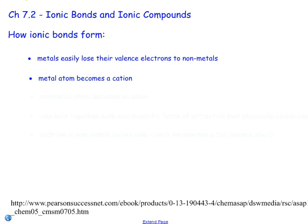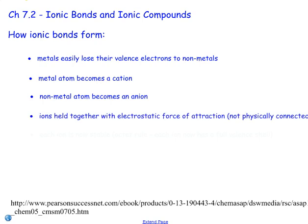The result is the metal atom becomes a positively charged ion called a cation. The non-metal atom becomes a negatively charged ion, which is an anion. And then the resulting two ions, the cation and the anion, are held together with what's called an electrostatic force of attraction. They're not physically connected, they are just attracted to one another, much like when you rub a balloon on your head or on your sweater and then the balloon sticks to a wall. That's an electrostatic attraction.